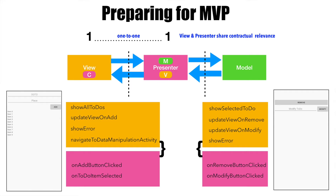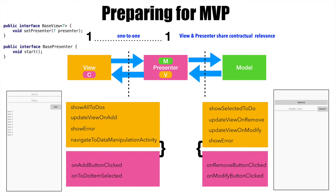When we actually get down to implementation, we basically start with creating a very basic view and presenter. Programmatically speaking, I would be creating an interface called base view and then I will be creating a base presenter. Base view has set presenter which takes presenter as the argument and base presenter has got a method called start, which we will be having a look at a bit later.